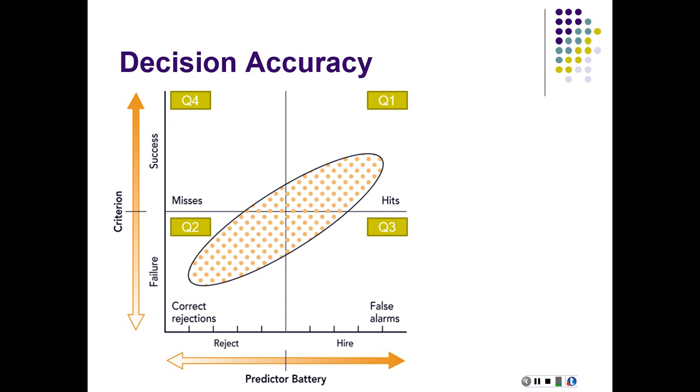If we look at quadrant one in the upper right-hand corner, those are the times that we've hired the person and they've been successful on the job. The analogy to that would be quadrant two in the lower left, where we didn't hire the applicant and they would have presumably been under the criterion level, a failure on the job, which would have to be hypothetical. Any of these rejects would be hypothetical because we don't have follow-up data on them because we didn't hire them.